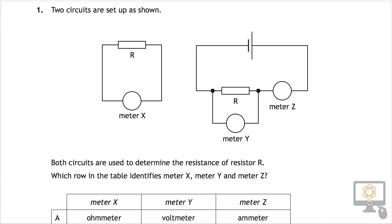We're going to be looking at question number one from the 2015 National 5 physics paper. This is the multiple choice questions. It says that two circuits are set up, as shown. Both circuits are used to determine the resistance of resistor R.